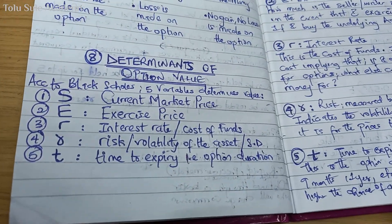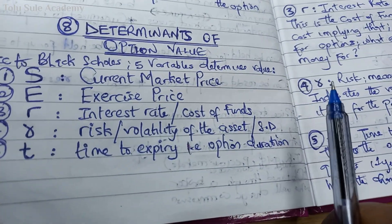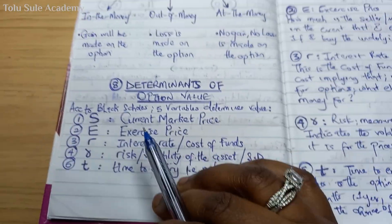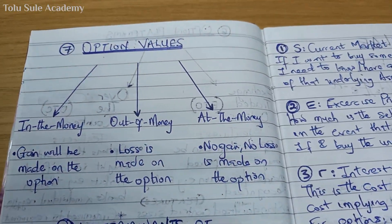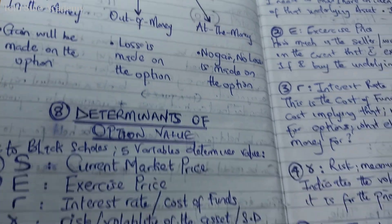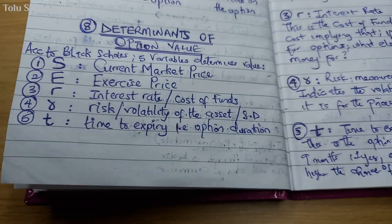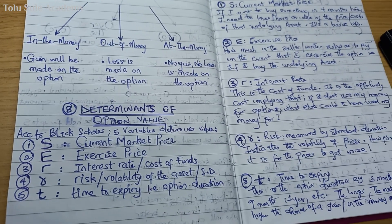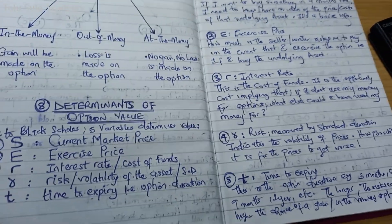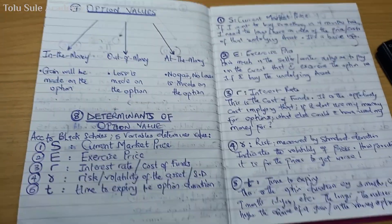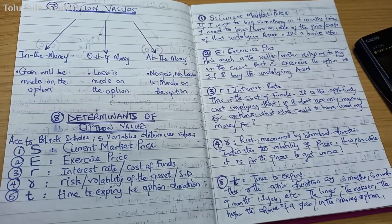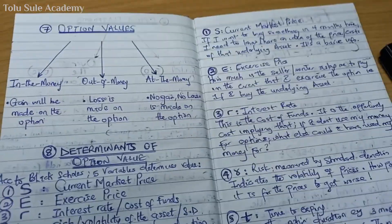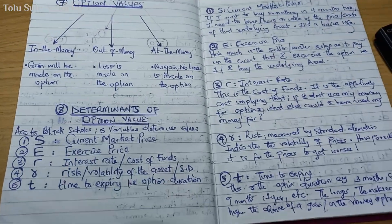Determinants of option value: according to Black-Scholes, there are five variables used to determine the option value. Now as an ICAN student, you are the accountant thinking on behalf of the holder — it's your job to financially derive that value.